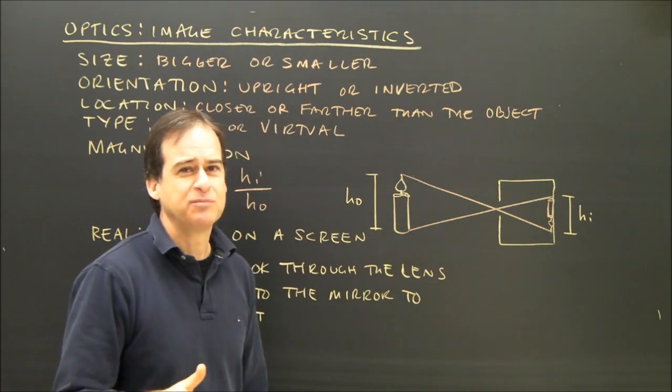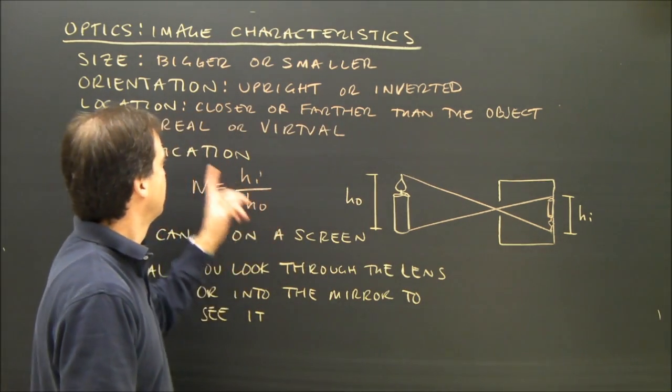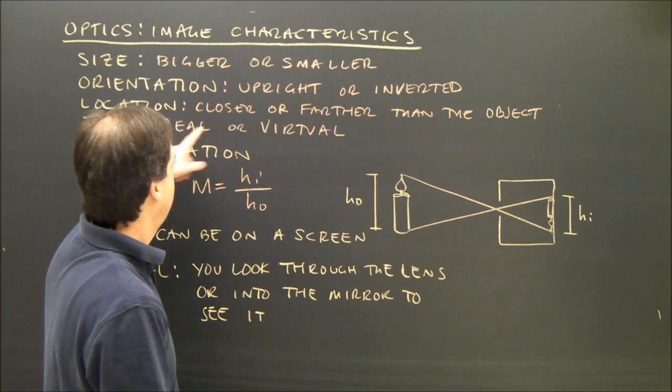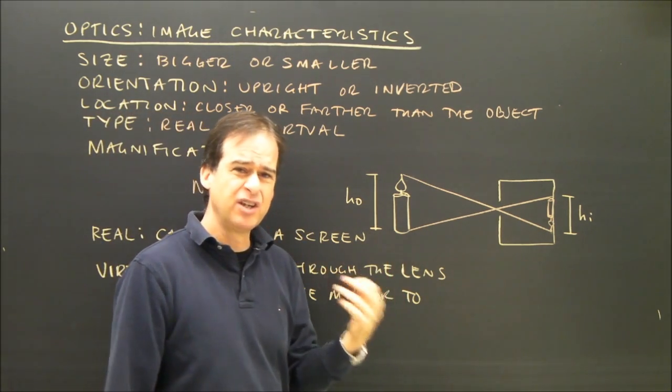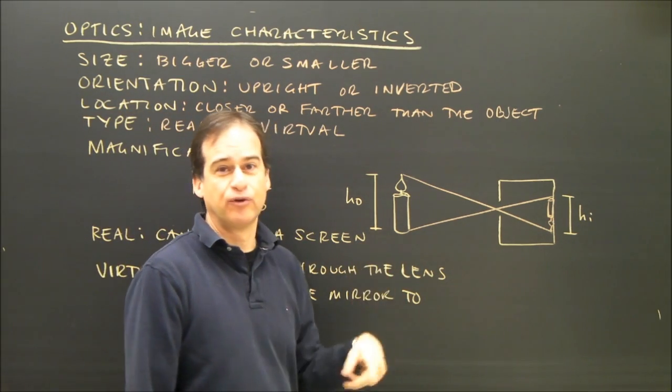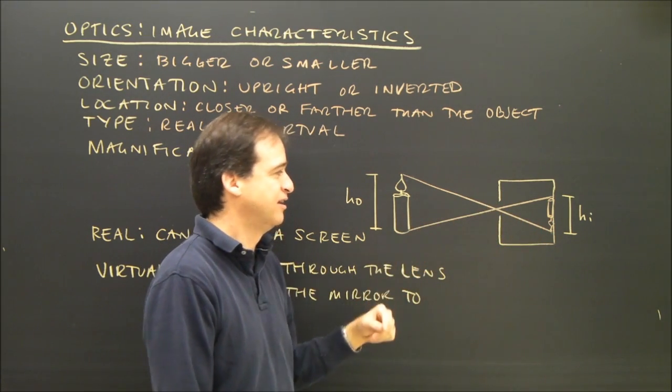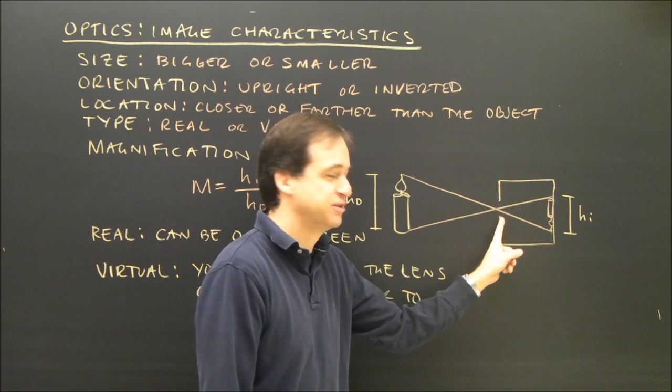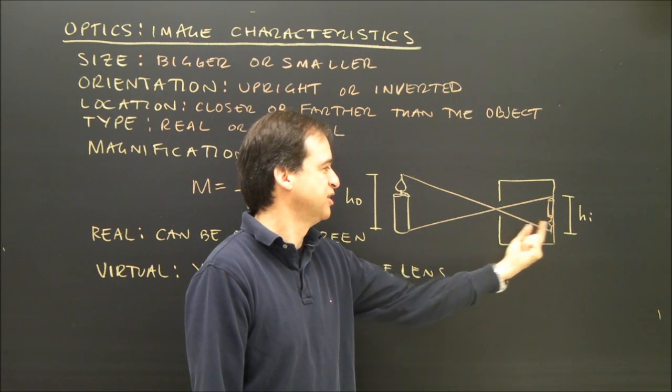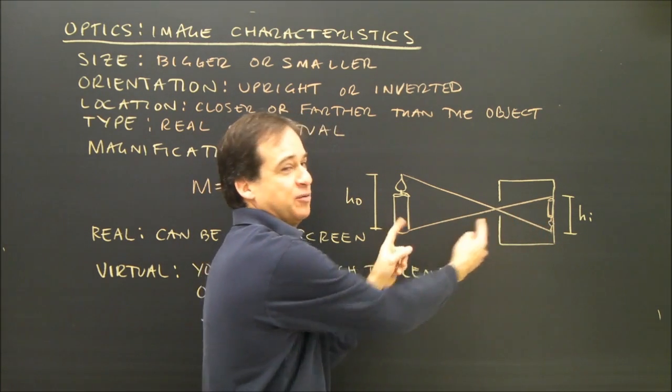The location, sometimes we don't need this information, but your teacher may ask for it. Location is, does the object appear closer or further from the lens? Does the image appear closer or further from the lens than the object? And in this case, this was the lens. This image is closer to the lens than the original object.